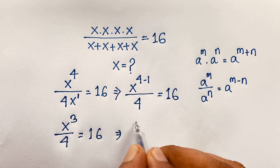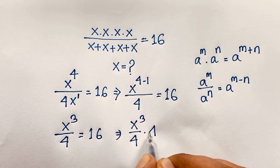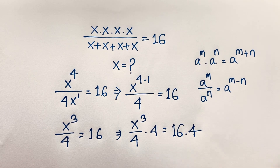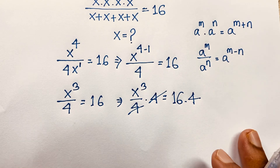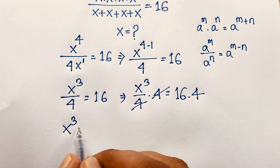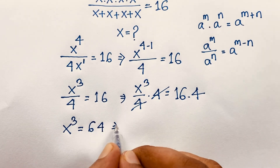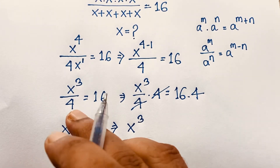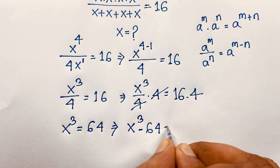Now we have x to the power 3 over 4 equals 16. I multiply both sides by 4. These 4s cancel out, and we find x to the power 3 equals 64. Moving the 64 to this side, it will be x cubed minus 64 equals 0.